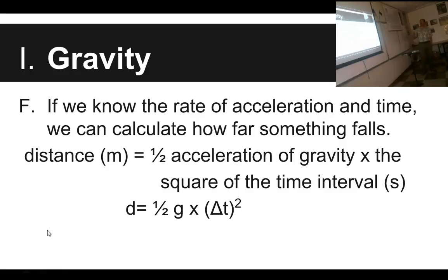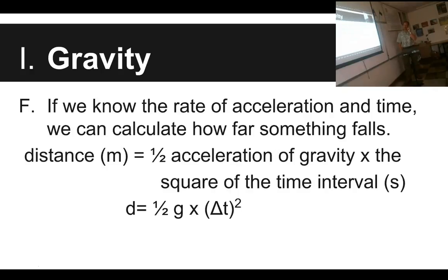Because we know how fast things accelerate and how long they're falling, we can also calculate how much distance is covered — how far did it fall? Distance equals one-half the acceleration of gravity times the square of the time interval: d = ½gt². This same equation can be used for any acceleration, not just gravity; we're just using gravity here as the example.